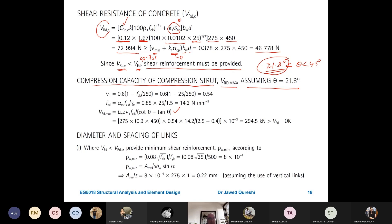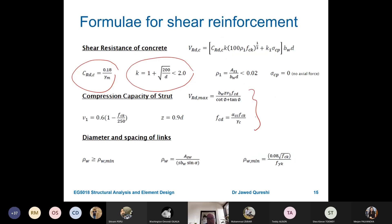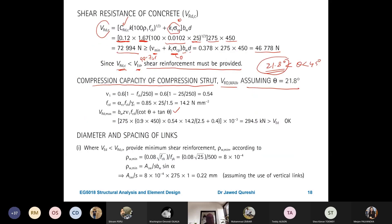So, V1 is 0.6 into bracket one minus FCK over 250. All formula are here. So, V1 is 0.6 into bracket one minus FCK over 250. Only variable here is FCK. So, from here, I get value of 0.54. Once I have this value, then I will go ahead and find FCD. FCD is again, I have already determined this alpha CC is 0.85. FCK is given. Alpha CC is a factor divided by gamma C, which is 1.5. This is giving me the design compressive stress, which is 14.2.